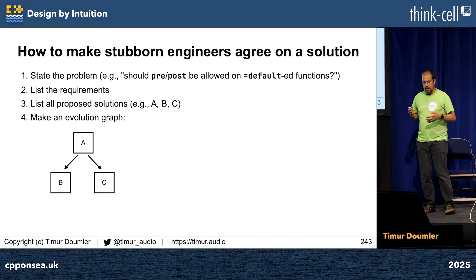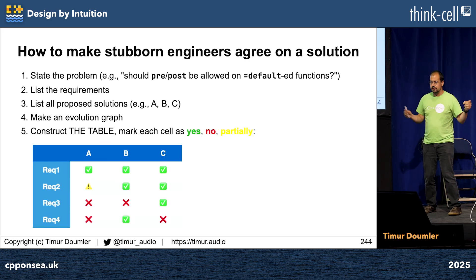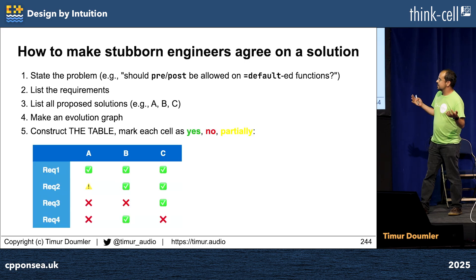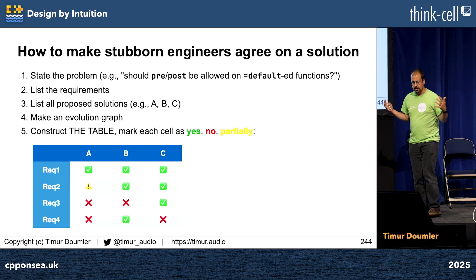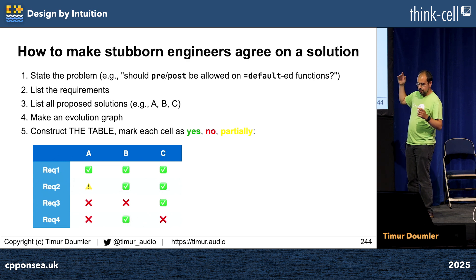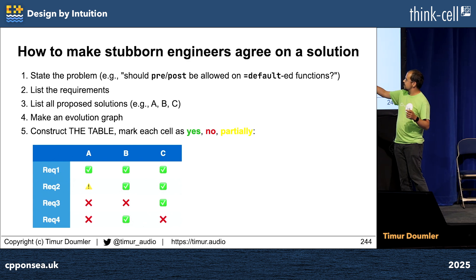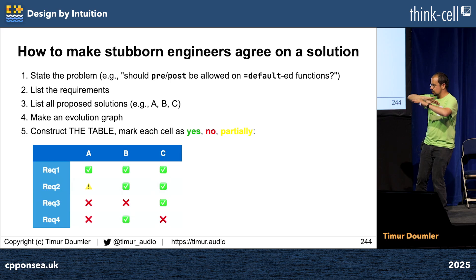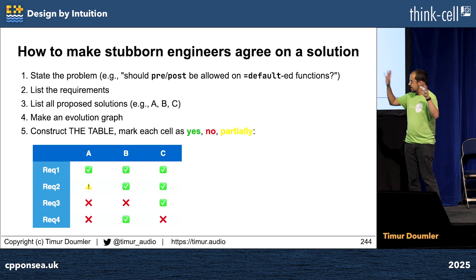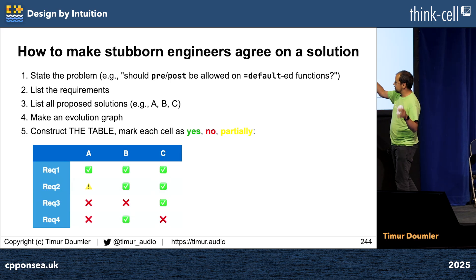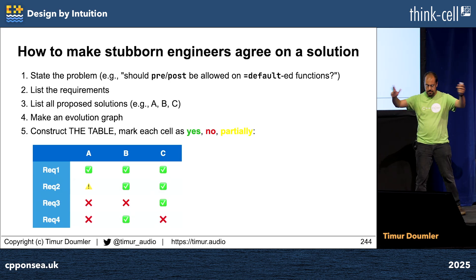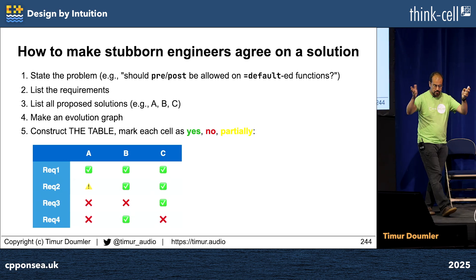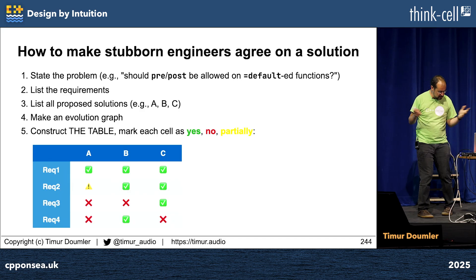And then you construct the table — I don't have a good name for it yet, so I'm just going to call it the table. The things you do there is mark each cell as yes, no, or partially. There's no more complicated things allowed; there are only three options: green, red, yellow, because it's nice and visual. Everybody understands what that means.